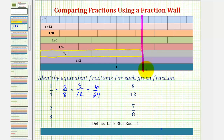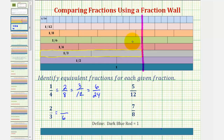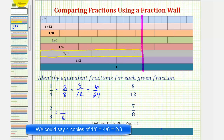Looking at our rods, notice how we can determine equivalent fractions with a denominator of six, twelve, and twenty-four. To find the equivalent fraction with a denominator of six, we count the number of one-sixth rods equal to two-thirds. It takes four rods of length one-sixth to equal two-thirds, which means four-sixths is equivalent to two-thirds.